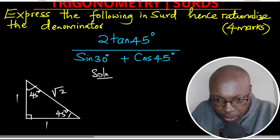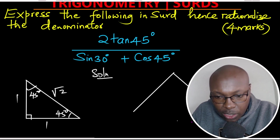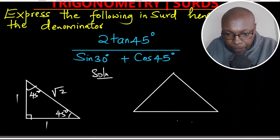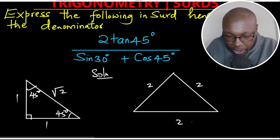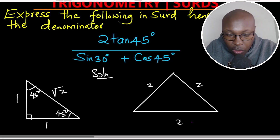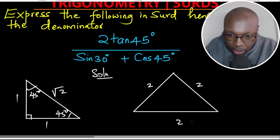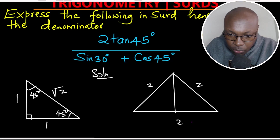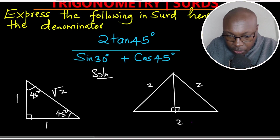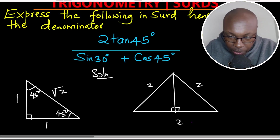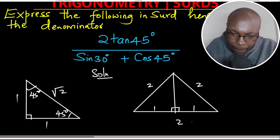The other triangle that you need is not an isosceles, but an equilateral triangle with measurements of two units on each side. In an equilateral triangle, all the angles measure 60 degrees. To derive the ratios, we drop a perpendicular from the top vertex, and that perpendicular will bisect the base. Since the base is 2 and it is bisected, each half will be 1.